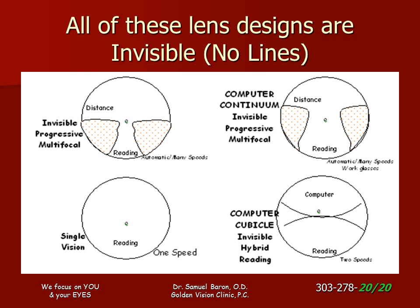There are no visible lines or marks on the lenses for you to see. These markings are just to show how they are designed to work. Each of these lens designs are options for you if you do considerable computing.